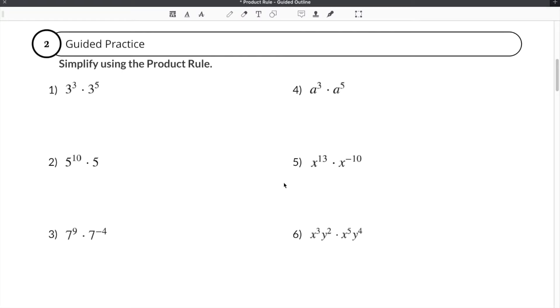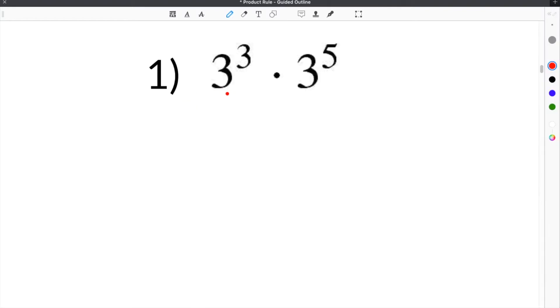Let's move on in our guided notes to some of our practice problems. Our first problem gives us 3 to the third times 3 to the fifth. If you look at this problem, we have a base of 3 in both terms. These bases are going to be kept. You're going to keep the base of 3 and then what you do with the exponents is that you add them.